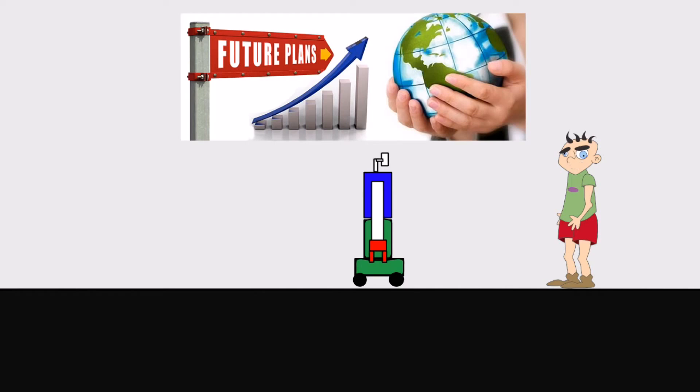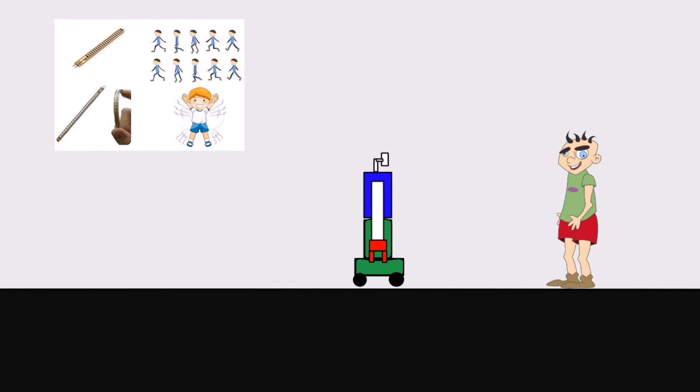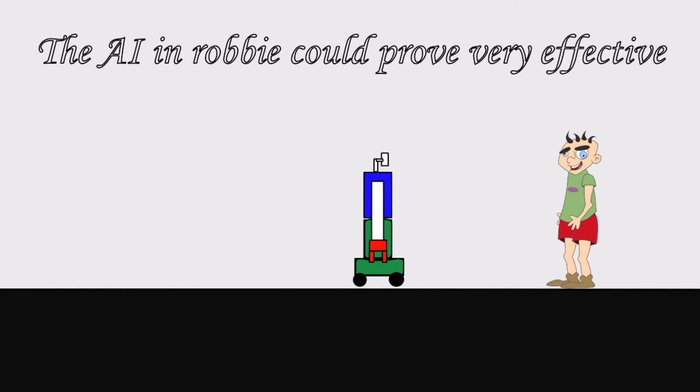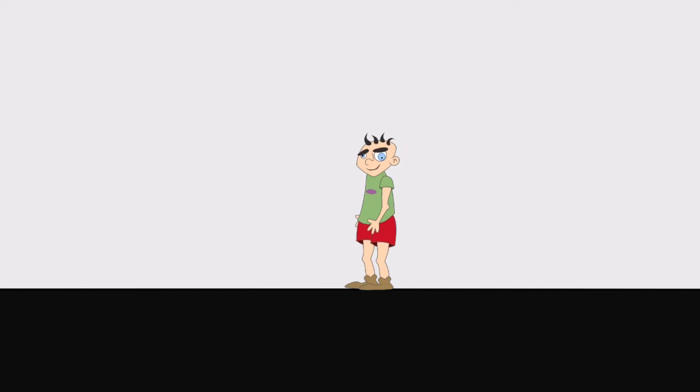With the accomplishment of future plans like movement recognition, IR sensor and light sensor, the artificial intelligence in Robby could prove very effective. Speaking about motion in Robby, there are basically four types of movements.